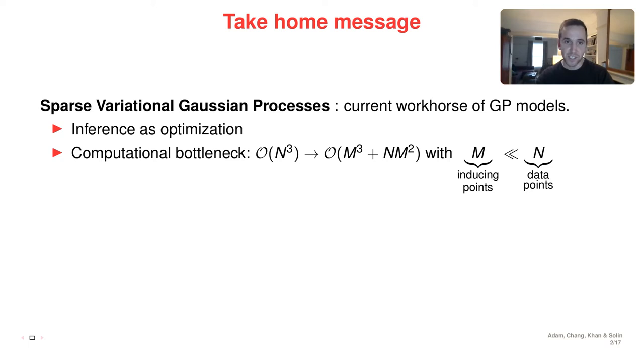I'll start with the take-home message, which is we work with sparse variational Gaussian processes, the current workhorse of Gaussian process models. This is so because, as a variational algorithm, it turns inference as optimization. Therefore, it leads to algorithms that are faster than sampling-based algorithms and can borrow a lot from the field of optimization.